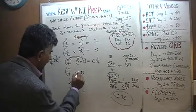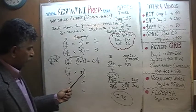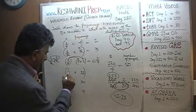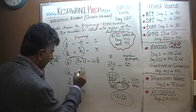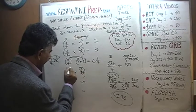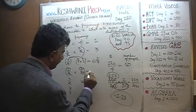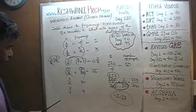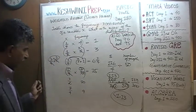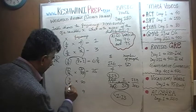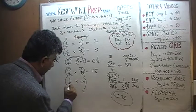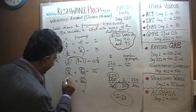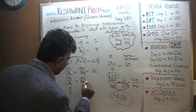Then we multiply five quarters by twelve. Divide top and bottom by four: twelve becomes three, and three times five is fifteen. Then we have three halves times ten. Divide top and bottom by two: ten becomes five, and five times three is fifteen one more time.